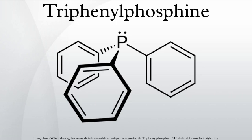The easy oxygenation of PPh3 is exploited in its use to deoxygenate organic peroxides, which generally occurs with retention of configuration: PPh3 + R2O2 → OPPh3 + R-OH. It is also used for the decomposition of organic ozonides to ketones and aldehydes, although dimethyl sulfide is more popular for this reaction, as the side product dimethyl sulfoxide is more readily separated from the reaction mixture than triphenylphosphine oxide. Aromatic N-oxides are also reduced to the corresponding amine in high yield at room temperature.